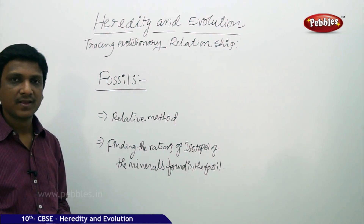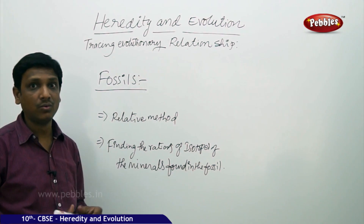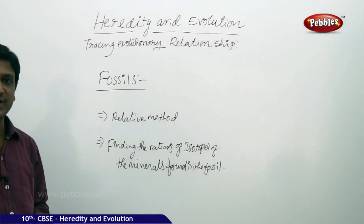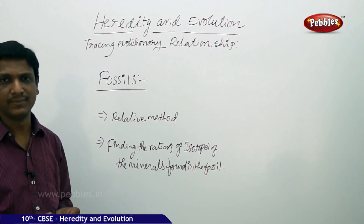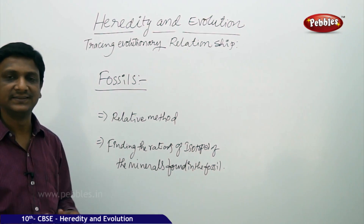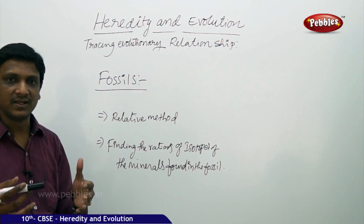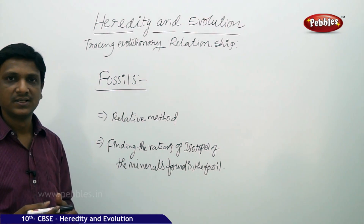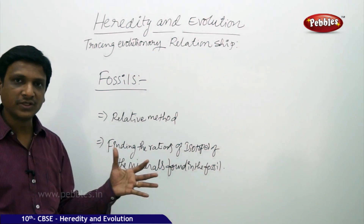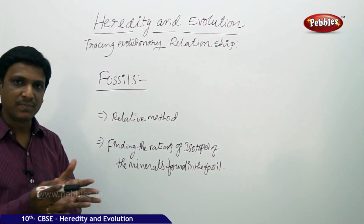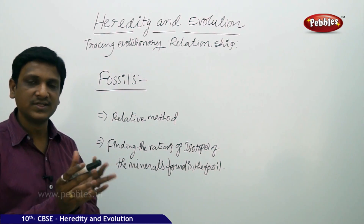By studying that fossil, you can understand the evolutionary relationship. They find different kinds of things: the bones of animals, sometimes the trunk of trees, and leaves also trapped in rock. When lava is molten, something can be trapped in the air spaces. Some insect or fish might get caught in hot mud, which then becomes hardened, and the body of the organism is not destroyed — it stays there for thousands and thousands of years.